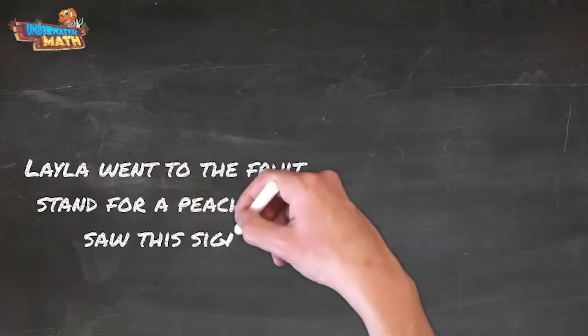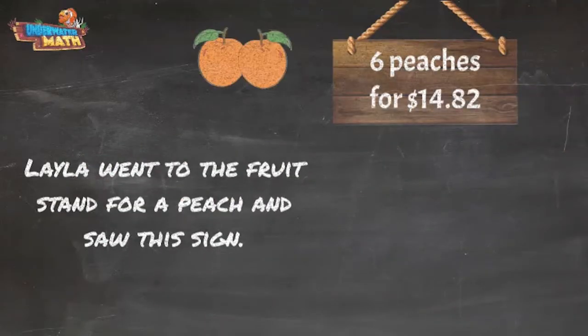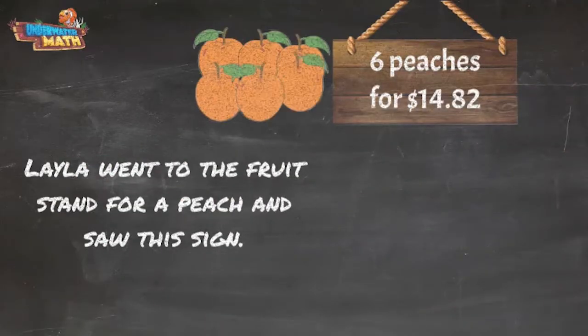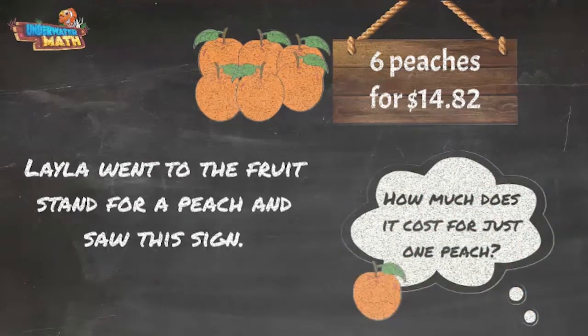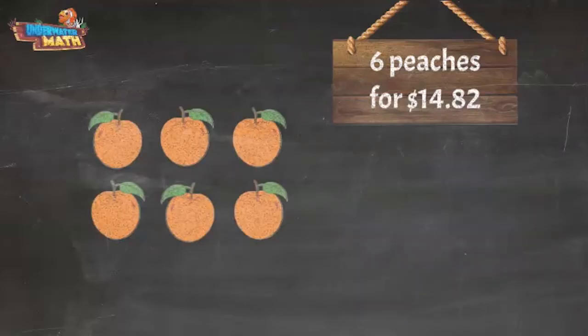Layla went to the fruit stand for a peach and saw this sign for the cost of six peaches. But she only wants one peach. How much does it cost for just one? If we cut these six peaches into six equal groups, we can find the cost for just one of them.